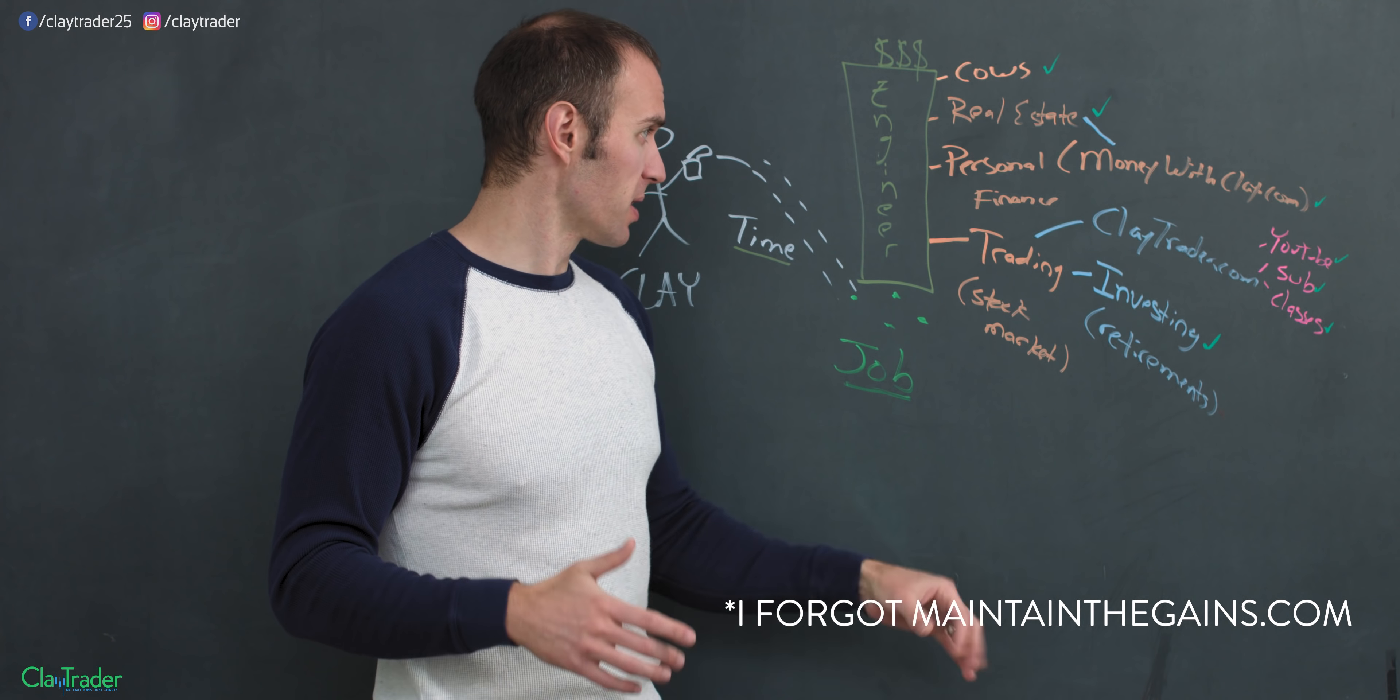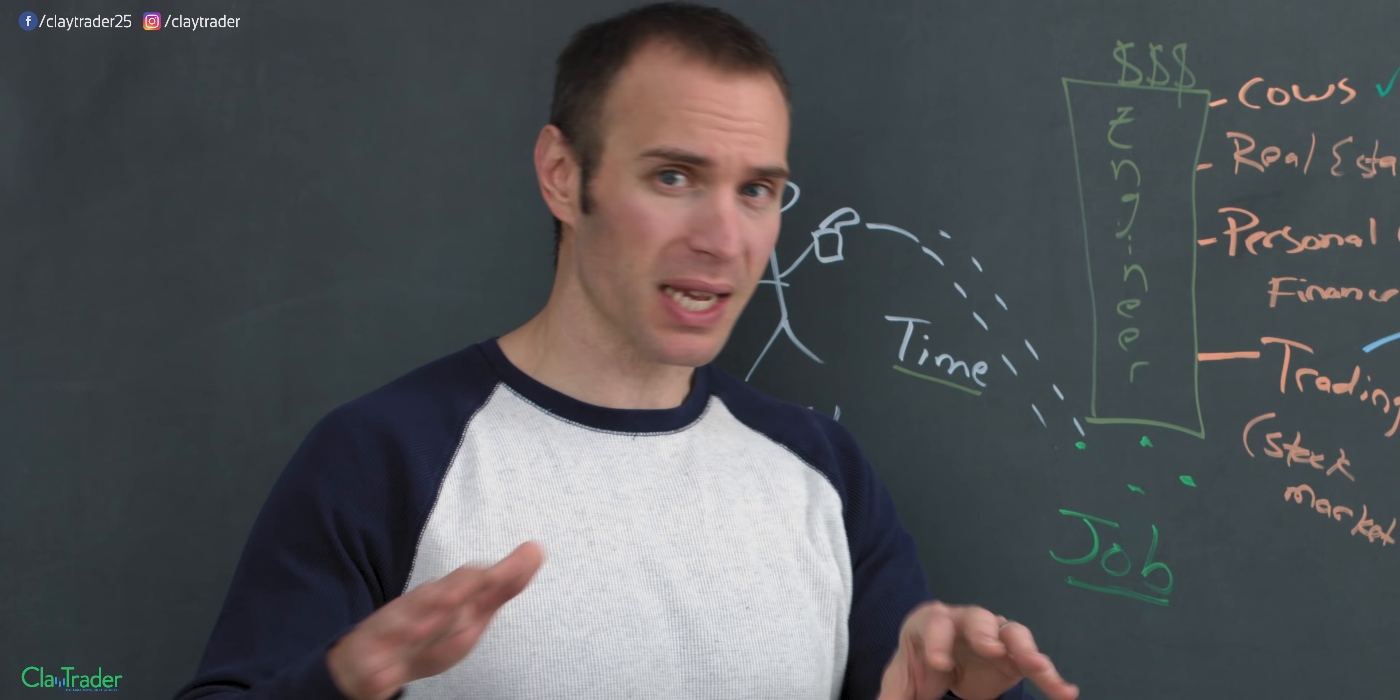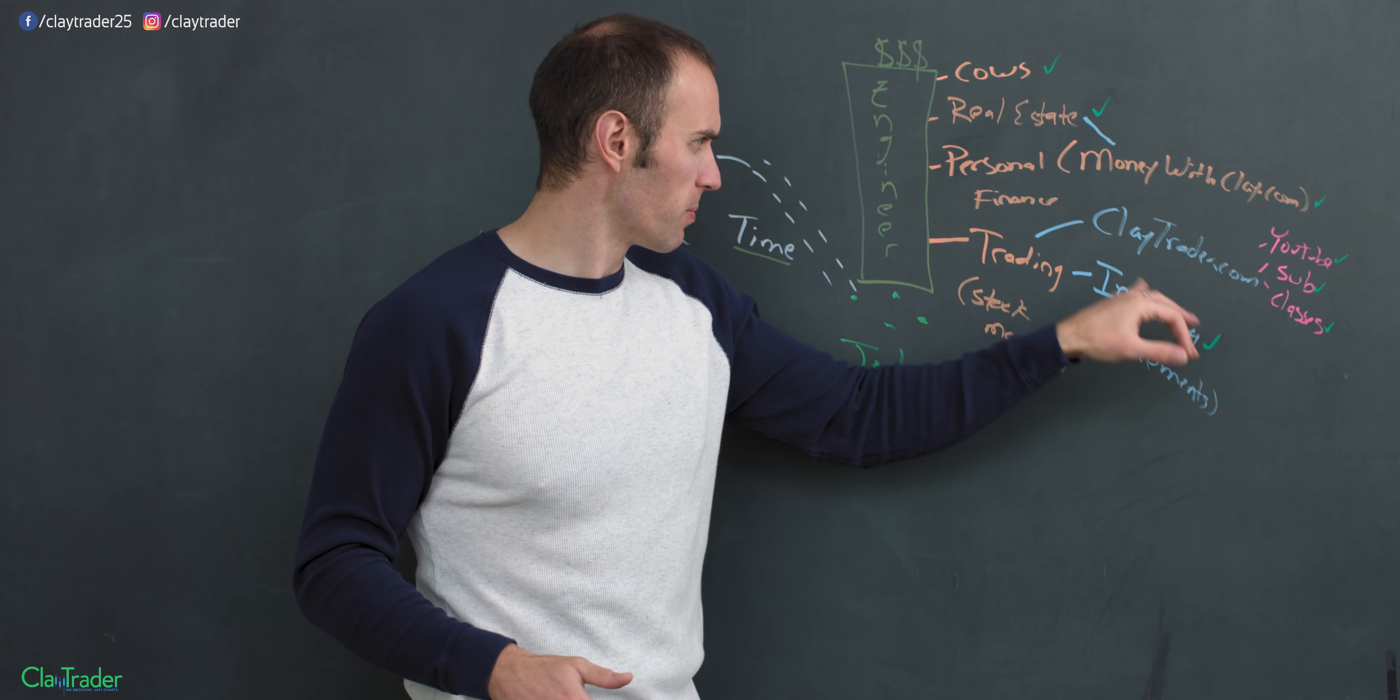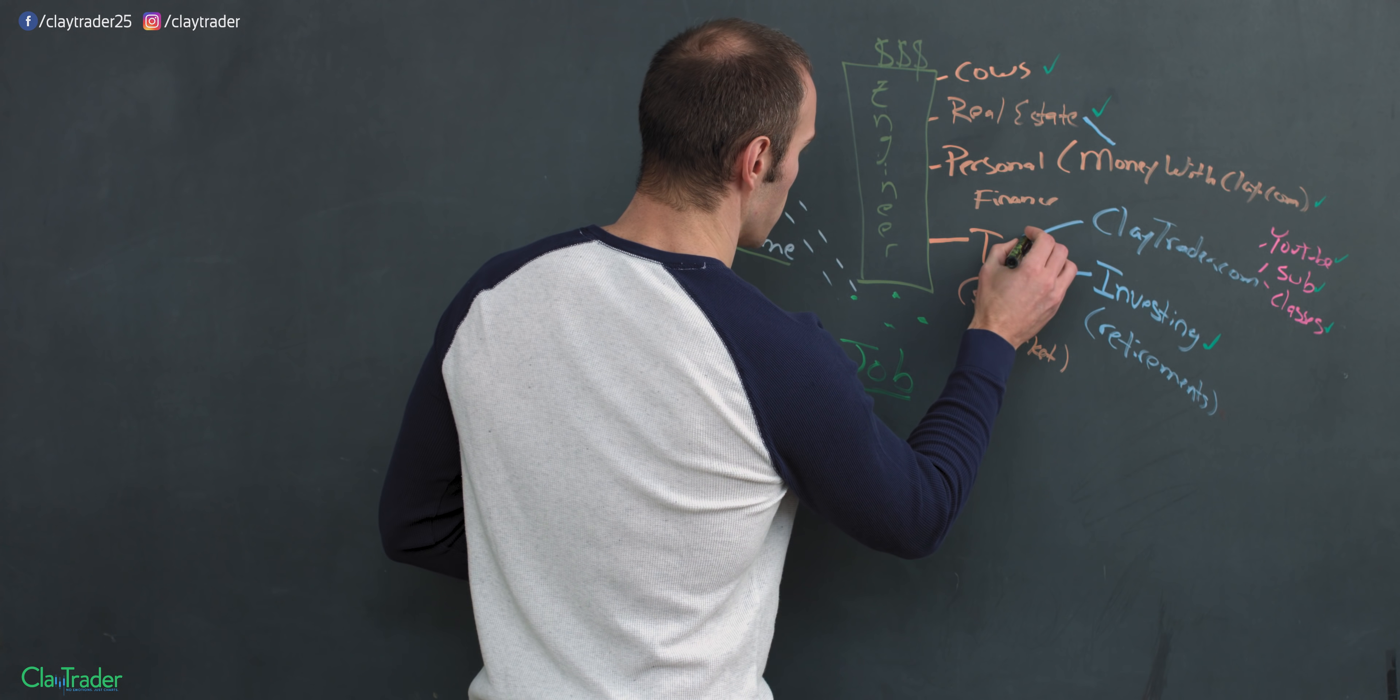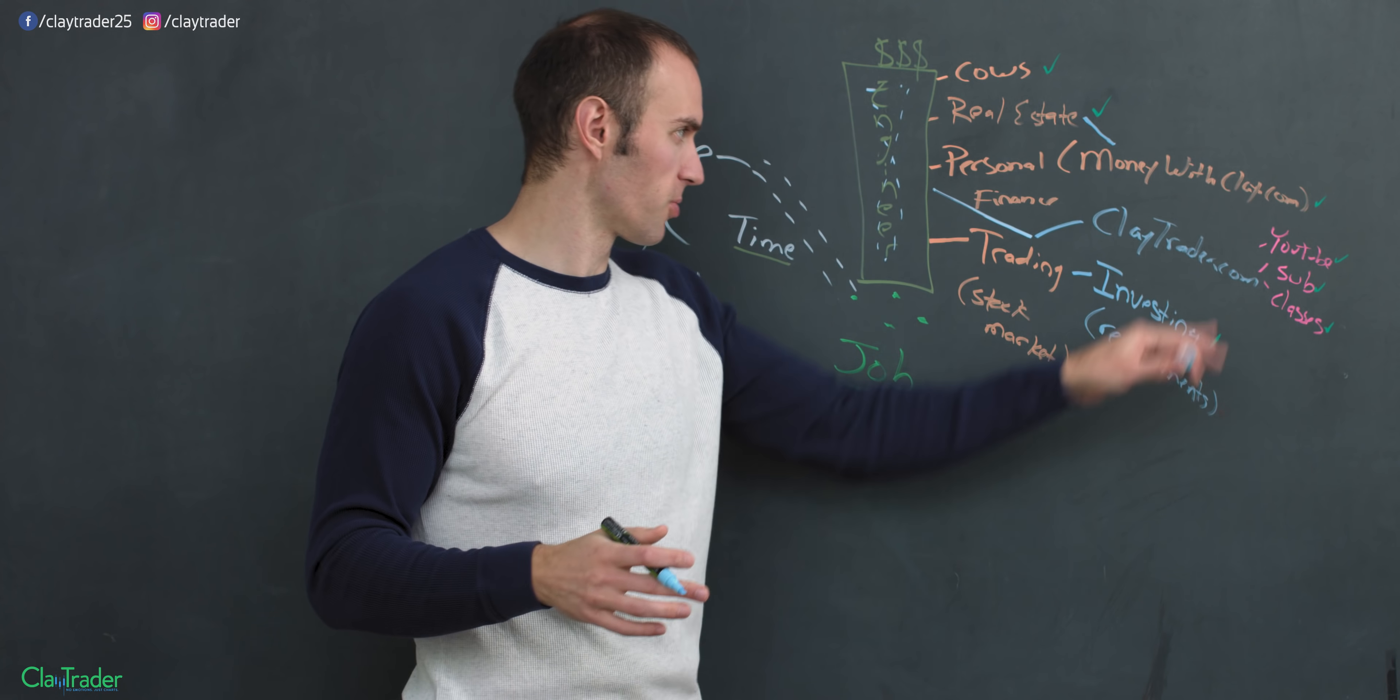Some of it is more active, right? The teaching business, got to be very active. Some of it is very passive. Investing, passive, I don't do anything. Real estate, passive. The cows, passive. I'm just a money person. Money with Clay, that would be active, kind of. But ClayTrader.com is definitely the one. And really, in all actuality, ClayTrader.com has now replaced this. That is what allowed me to branch off into all these other different areas.